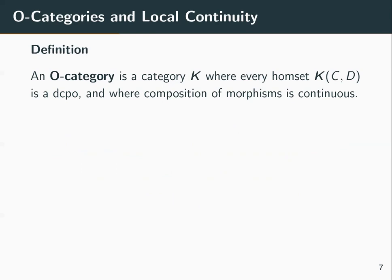O-categories take their roots in the work of Wand, Plotkin, and Smith. An example O-category is the category DCPO. We can also make any category into an O-category simply by taking the discrete ordering on hom-sets.